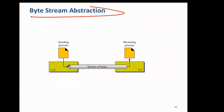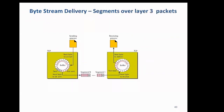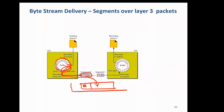TCP provides byte stream abstraction: the sending process just sends a stream of bytes, and the other end receives them in the same order — like water in a pipe. Internally, we have a send buffer; the TCP layer takes some bits, creates a TCP segment with a header containing port numbers, passes it to IP, and it travels to the other end. The receiver extracts the data, fills a receive buffer, and the receiving process reads it.